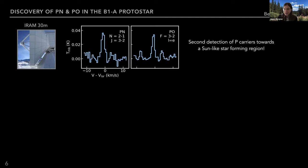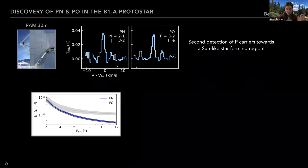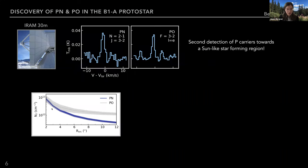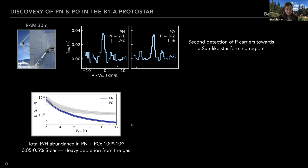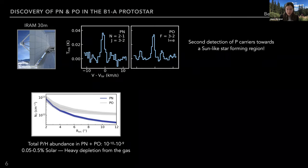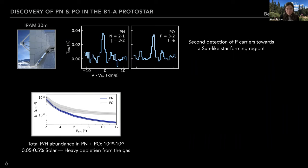This is only the second time that phosphorus carriers have ever been detected towards a Sun-like star-forming region. These are observations made with the IRAM 30-meter telescope, showing bright detections of PN and PO. We can do preliminary analysis of the properties of phosphorus emission using these single-dish detections. A main challenge is we don't know how big the emitting area of the phosphorus molecules is, so we have about an order-of-magnitude uncertainty on the column density depending on the emitting source size. We can get crude constraints: the phosphorus abundance in PN and PO is between about 10⁻¹⁰ and 10⁻⁹ with respect to hydrogen — less than a percent of the solar phosphorus abundance — implying phosphorus is heavily depleted from the gas phase.